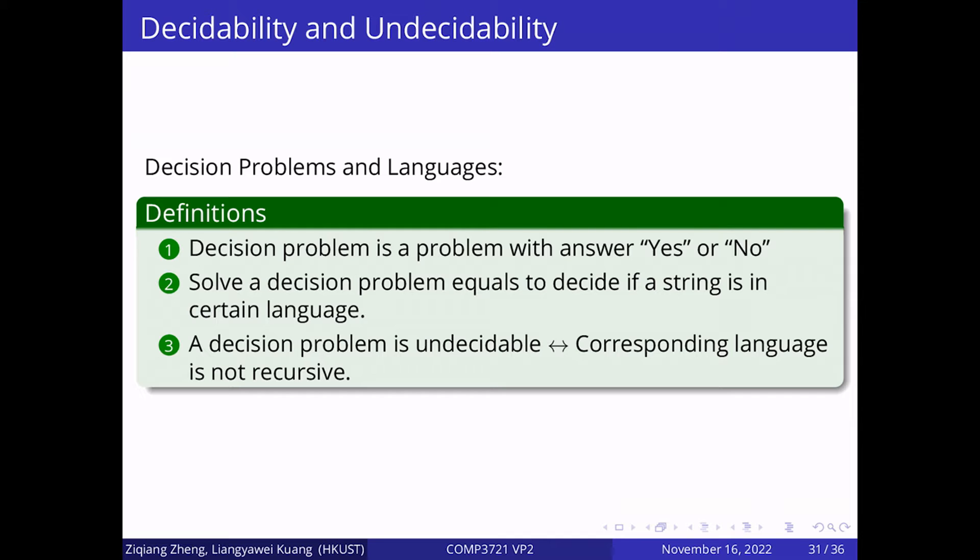Next, we explore the decidability and undecidability of problems. We will also discuss the relationships between decision problems and languages. Decision problems are the problems that can be answered with yes or no. Solve a decision problem equals to decide whether the given string is in a certain language. If we aim to demonstrate a decision problem is undecidable, we can check whether the corresponding language is not recursive.